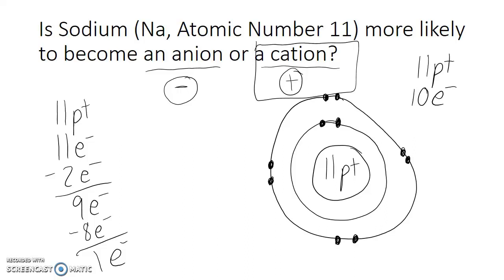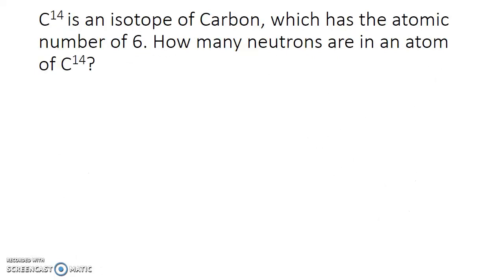Now, the final type of question I'd like to go over in this video has to do with isotopes. Isotopes are atoms of the same element, but which may have different mass numbers. So it's important to remember the difference between the atomic number and the mass number.